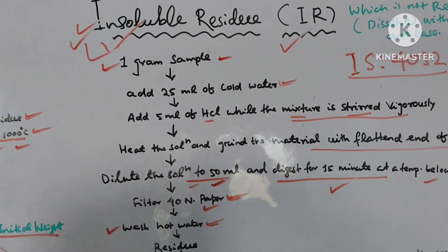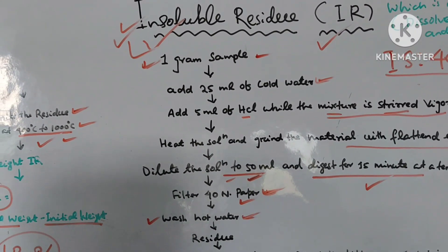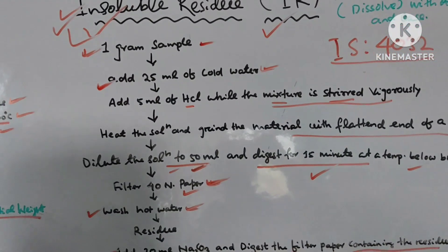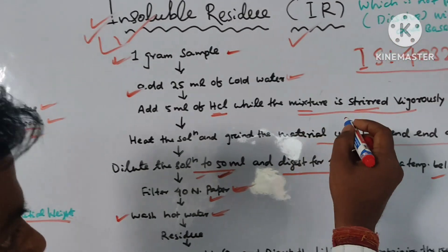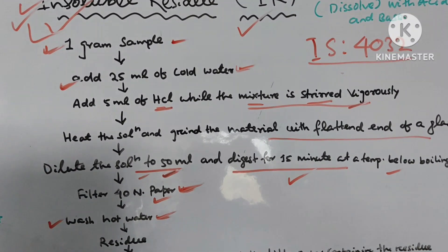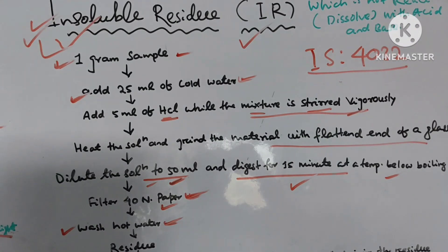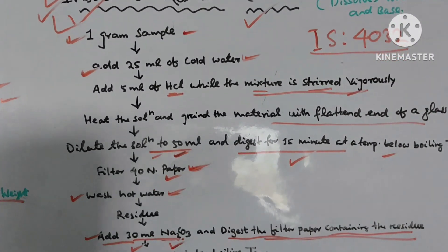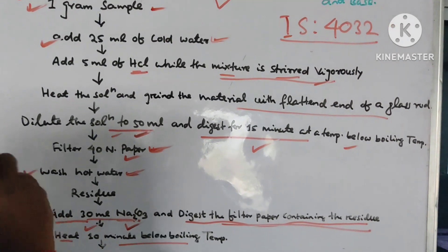Suppose we are going to test IR. We take a simple 1 gram sample. So 1 gram sample of cement. Add 20 ml of cold distilled water, then add 5 ml of hydrochloric acid (HCl) while the mixture is stirred. When you add HCl, it should be mixed properly - stir vigorously for homogeneous mixing, and automatically your result will be perfect.